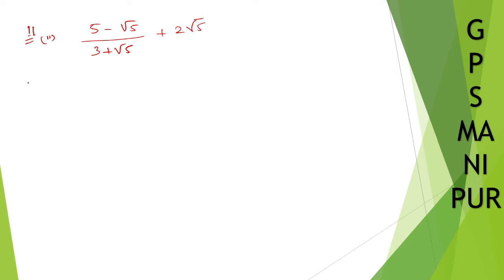So here we are going to solve this question and find out if it is a rational number. Let us take the LCM of these two numbers. The LCM will be 3 plus root 5. Here it is 1, so we are going to do cross multiplication. This one will multiply here, so 5 minus root 5, and this one will multiply here, so plus 2 root 5.